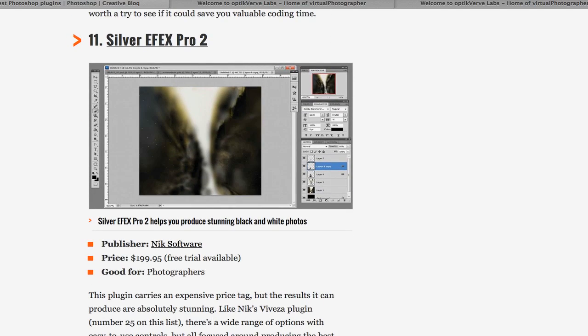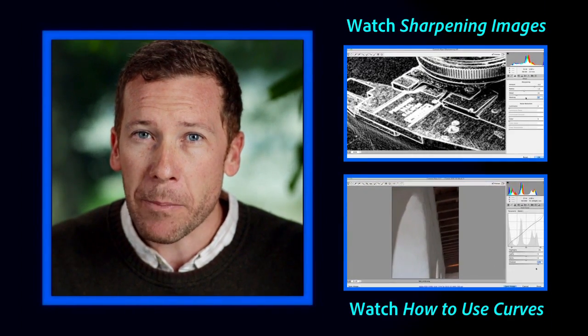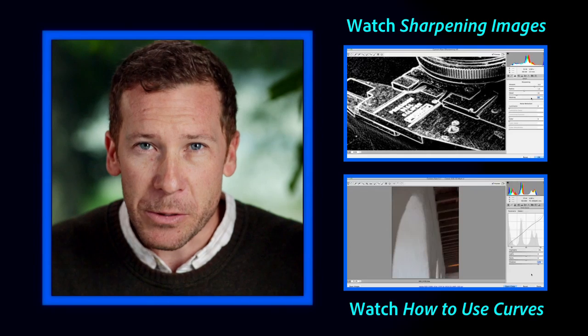Coming back to this site and scrolling down, I can see there are plugins for all sorts of different uses, and down at number 11 is the one we just looked at — Silver FX Pro. Most of these are available for Photoshop or Lightroom, and some are available as standalones. You'll quickly find that if you have an interest in a particular area of Photoshop there's almost certainly a plugin for it, and if you have a rare file format there's a very good chance Photoshop can open it using a plugin.